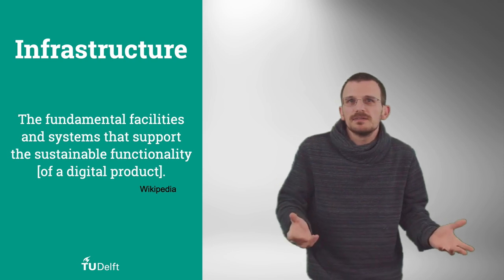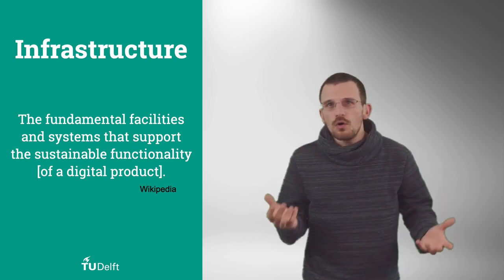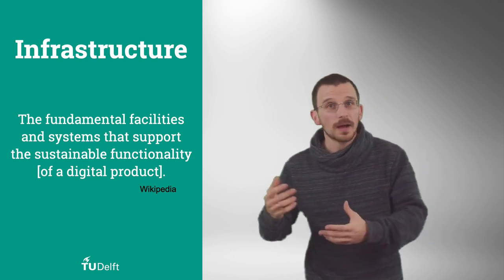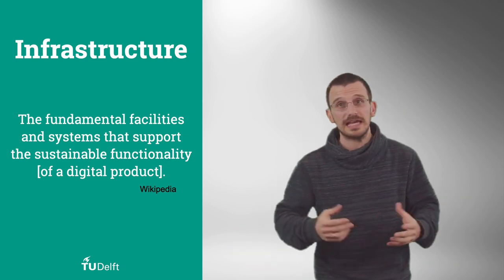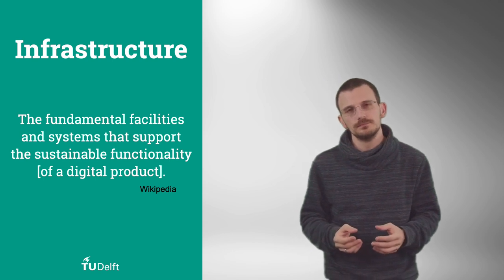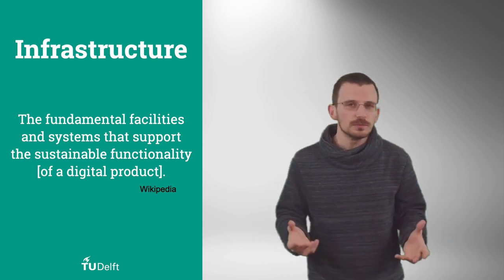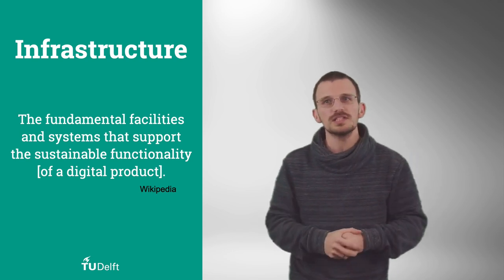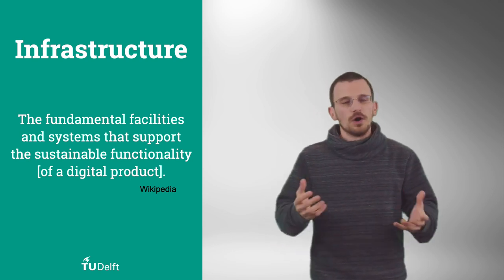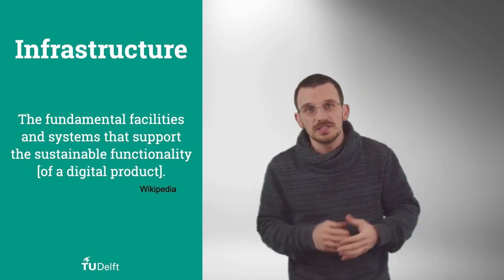Behind the scene, there is a whole electric infrastructure in the house to power appliances, but also beyond to produce, distribute and sell electricity. The infrastructure is the fundamental facilities and systems that support the sustainable functionality of, among others, a product, a digital product.